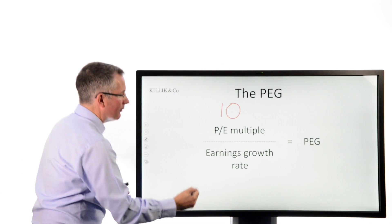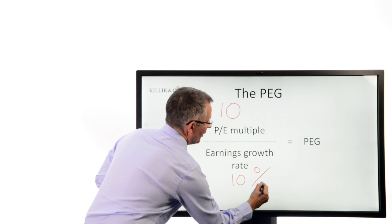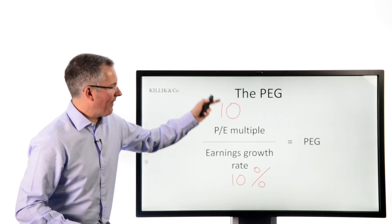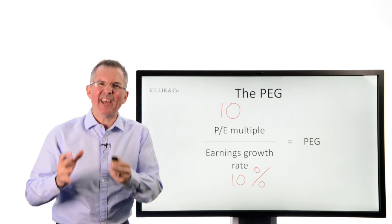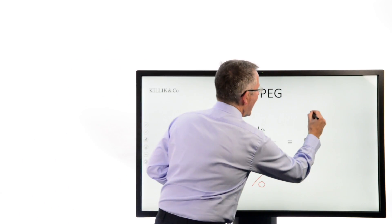So you can imagine if the earnings growth rate happened to be 10%. Now, purists on the maths here will say you can't really divide that by that because, well, the PEG kind of takes that shortcut, so bear with me. Divide 10 by 10, you get a PEG of 1.